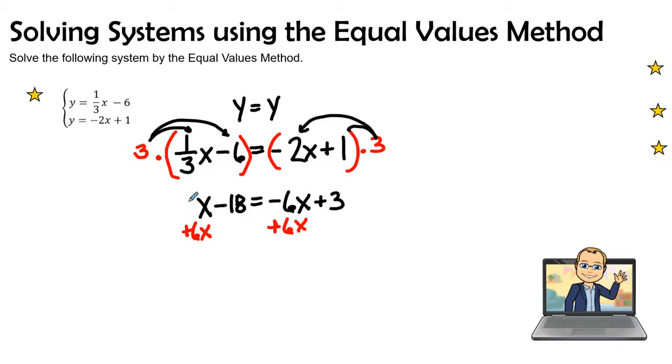And remember what we said, that this x by itself is really a positive 1. So therefore, 1x plus 6x is 7x minus 18, keeping our equal signs in line with each other. Negative 6x plus 6x cancels out or it equals 0, and so that drops off, and then we will go ahead and bring down our positive 3.